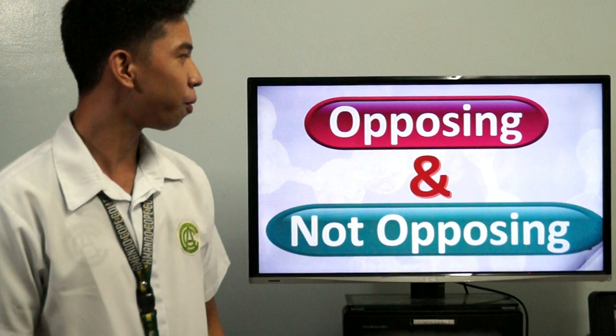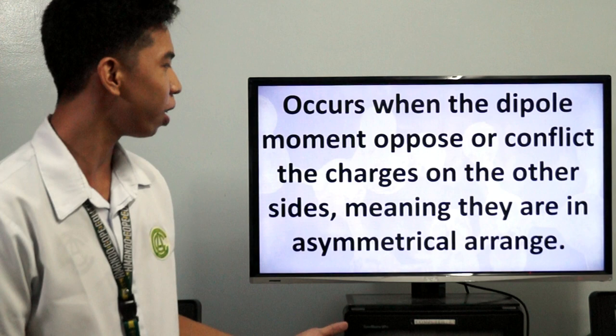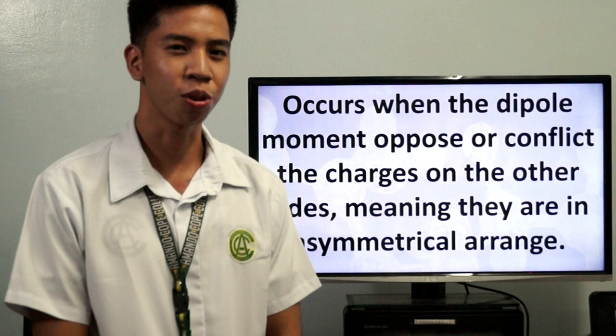Let's tackle first all about polar. When we first hear the word polar, we often make the mistake of assuming it is indeed a polar bear. But in chemistry, polar occurs with a dipole moment opposed in conflict, with charges on the other sides — meaning they are in an asymmetrical arrangement.